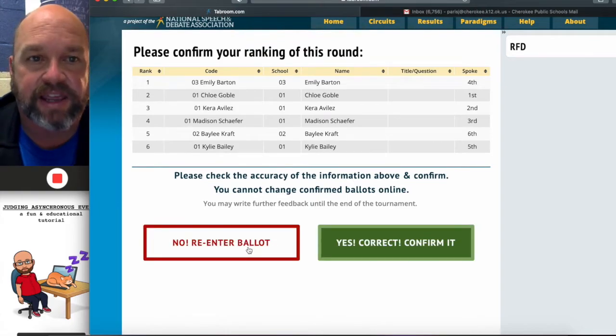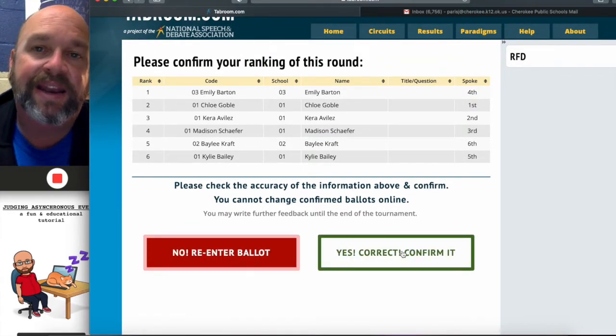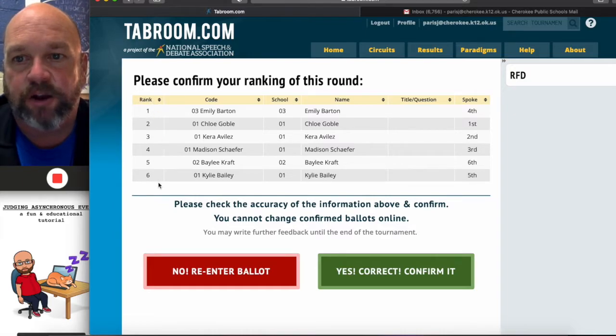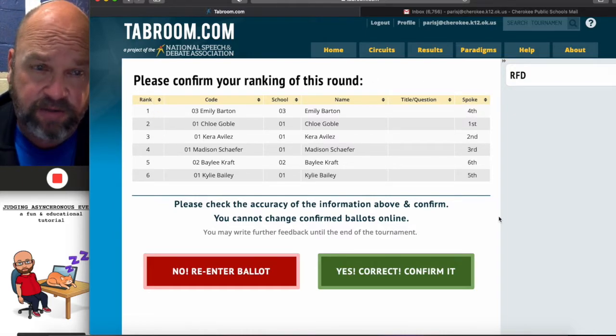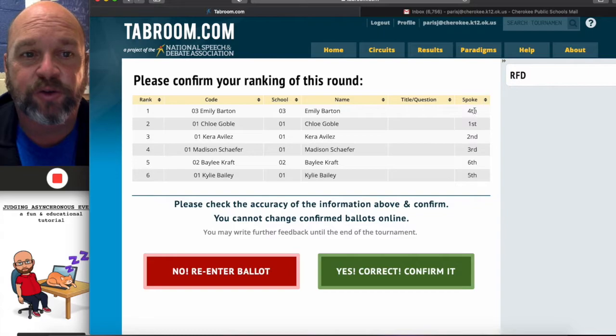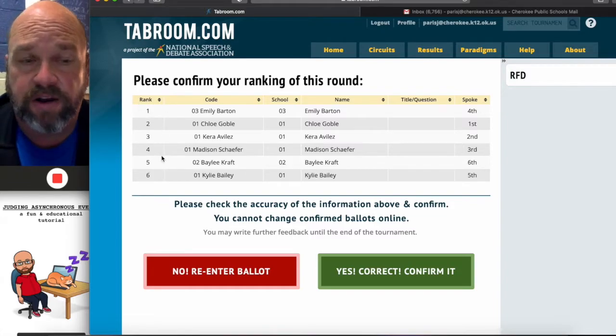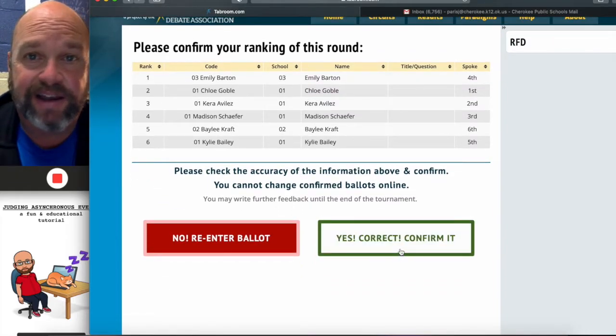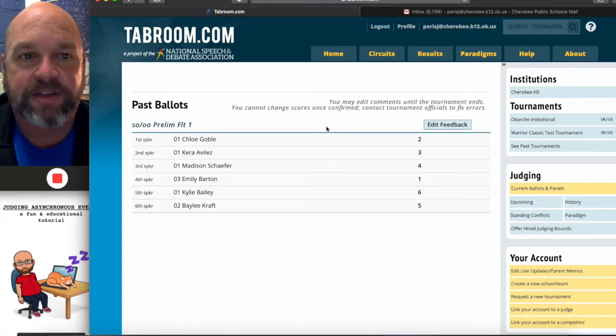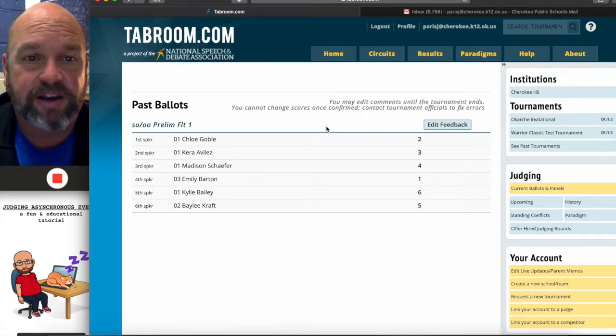Here you can see, no, re-enter ballot. I can fix that stuff. Or, yes, I can confirm it. And, it is important that you go through and confirm. It can be a little bit confusing because the ranks are over here on the left. We're used to putting the ranks over here on the right. And, when you look at that, this is the order they spoke in. So, there's no need to panic. Those ranks aren't accurate. These are the ranks. And they list the students in order of their ranks. So, there you have it. This is correct. I'm going to hit yes, correct. And, great. It says, you may edit comments until the tournament ends. You cannot change scores once confirmed. Contact tournament officials to fix errors. And, that's how you judge in the new virtual world.